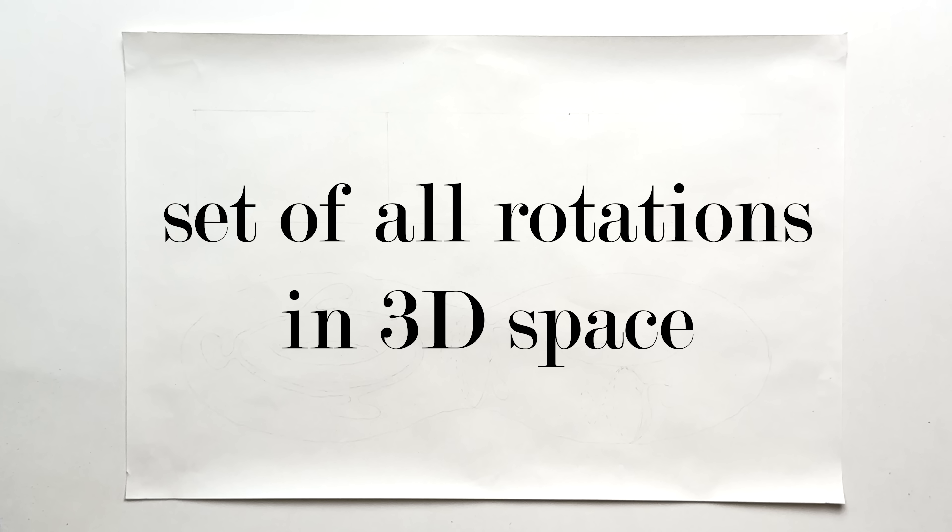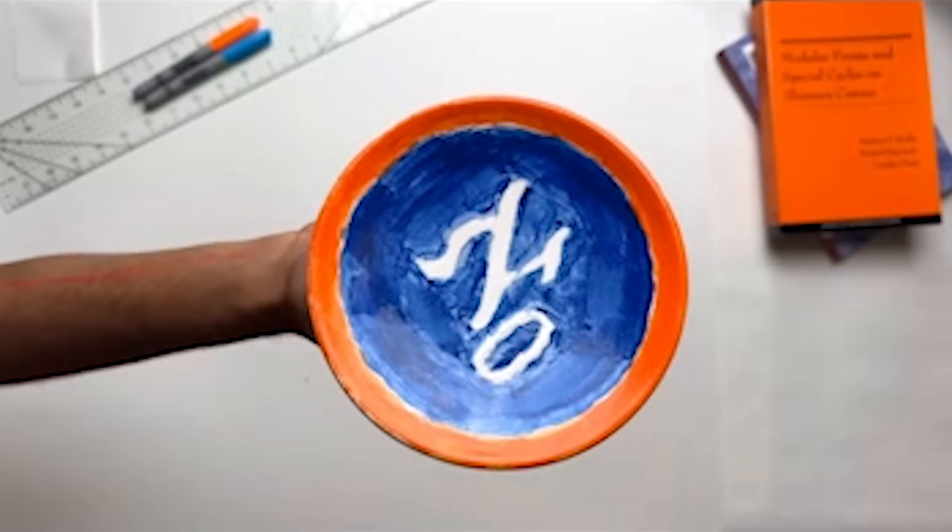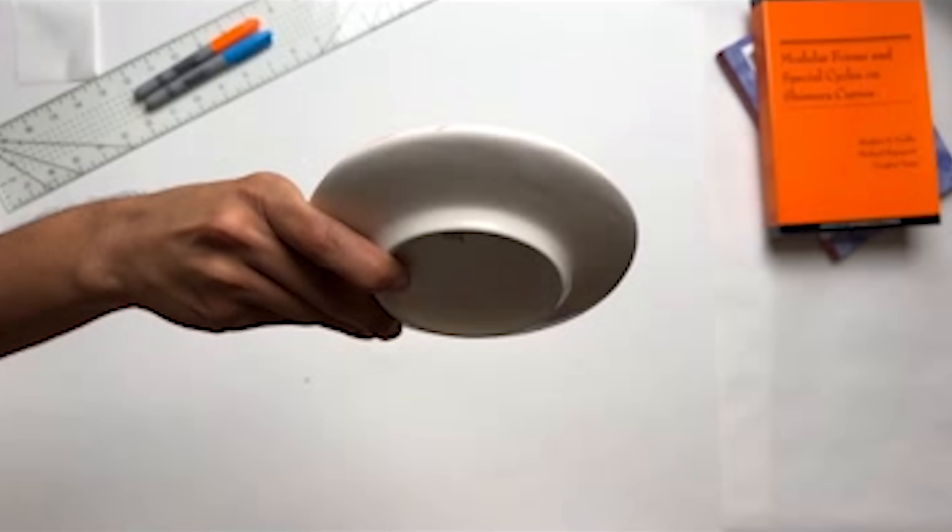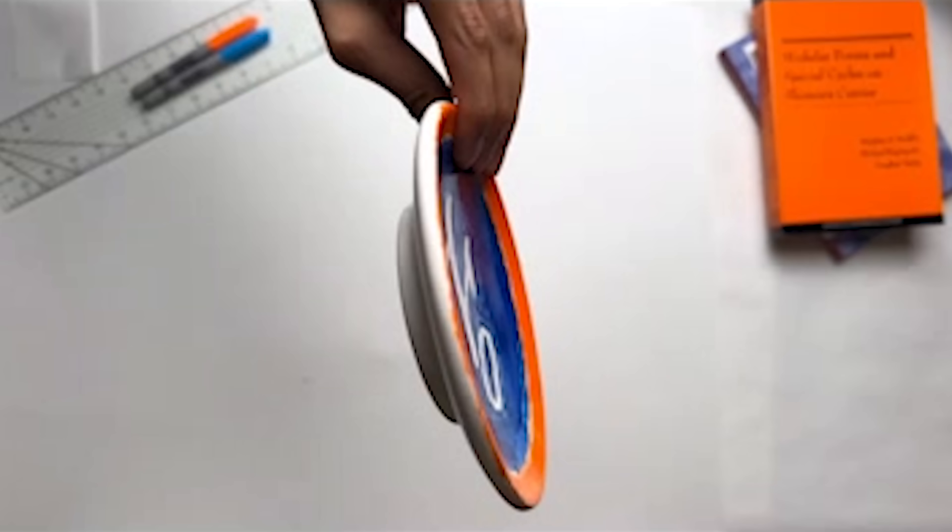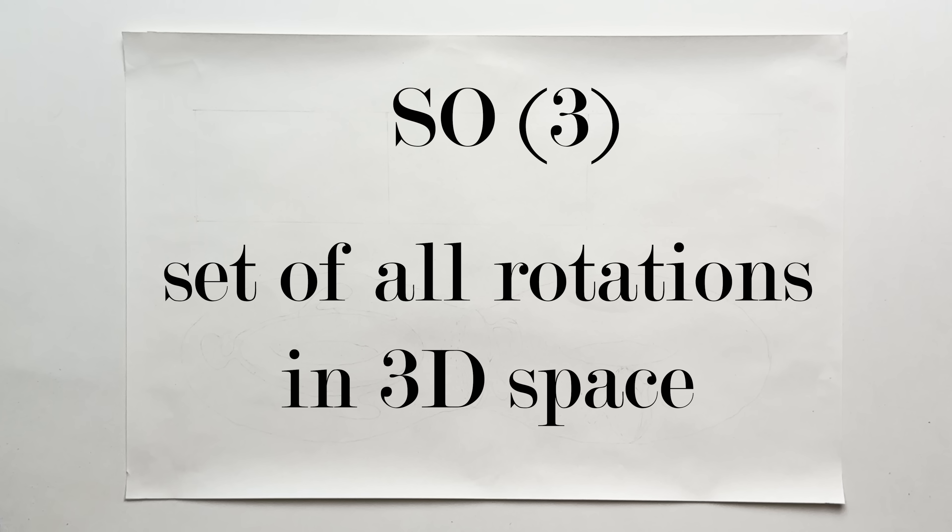Consider the set of all rotations in 3D space. If you have a plate, each 3D configuration of the plate represents a 3D rotation. The set of all such 3D rotations forms a space, called SO(3).